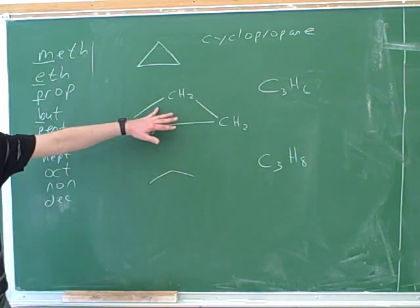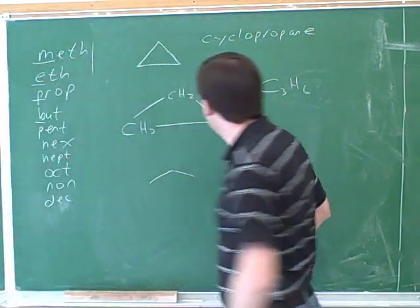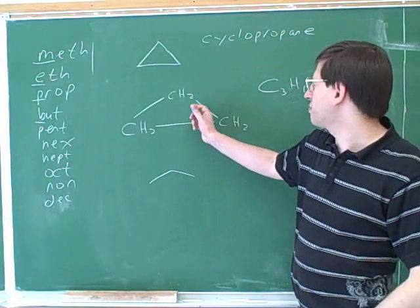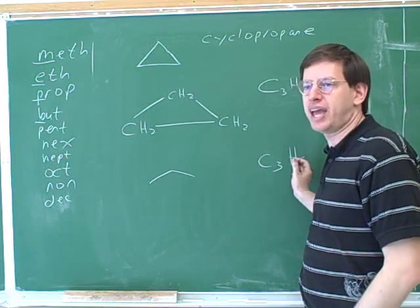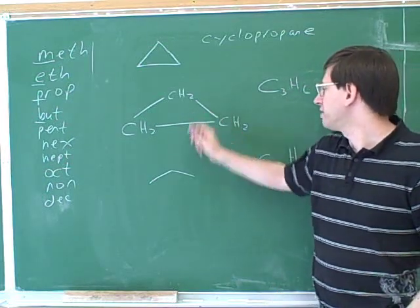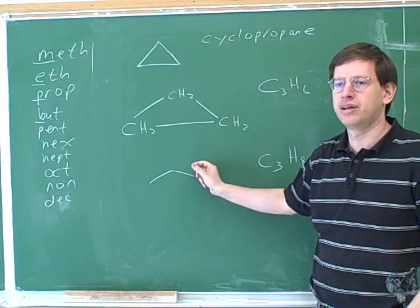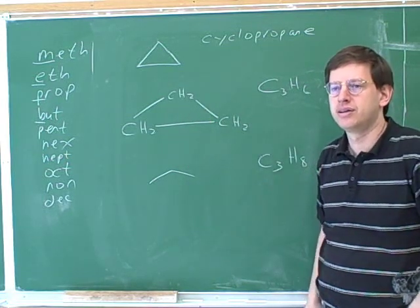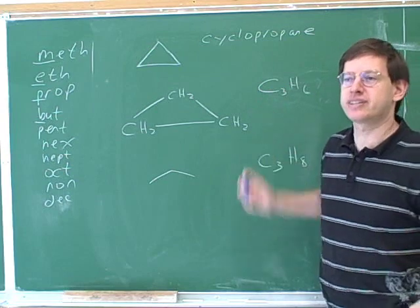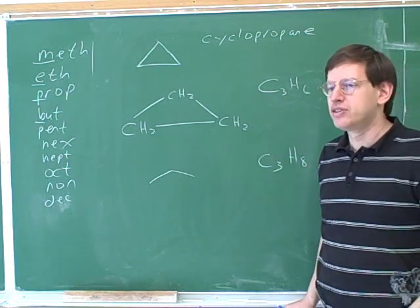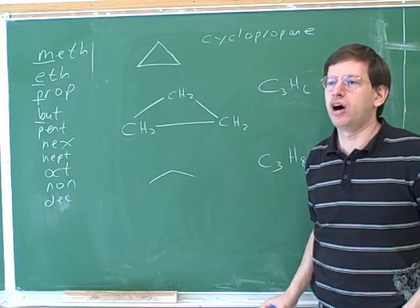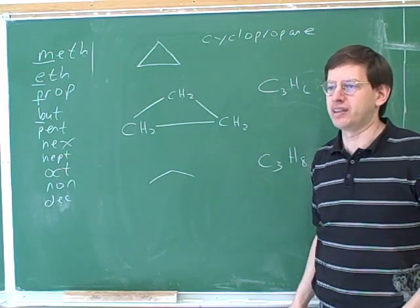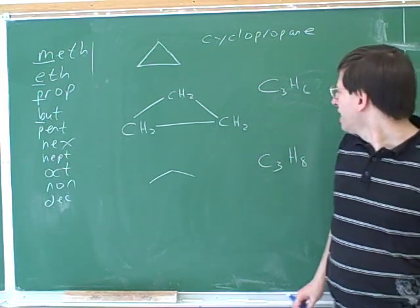So here we have this ring. So here we have three carbon chain with six hydrogens, and here we have a three carbon chain with eight. So notice, by the way, are these two compounds isomers? No. Because they have different numbers of hydrogens. These are not isomers. So you would not want to include these cyclic compounds when you're trying to draw all the isomers of something unless they are cyclic.